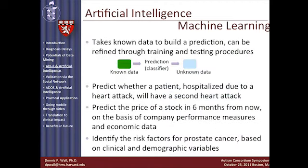Machine learning actually isn't all that complicated when brought down to its simplistic elements. It takes known data to build a prediction, can be refined through training and testing procedures iteratively, and is then applied to unseen data to validate those predictions. Machine learning has penetrated many fields — enabling us to predict whether a patient will have a second heart attack, predict stock prices, and identify risk factors for prostate cancer.